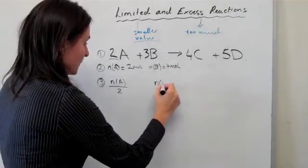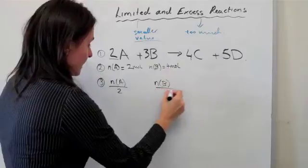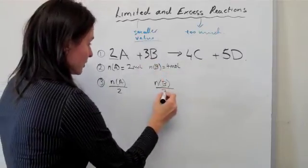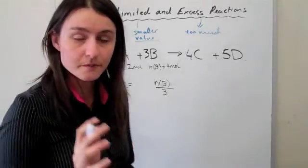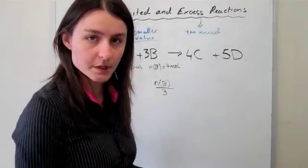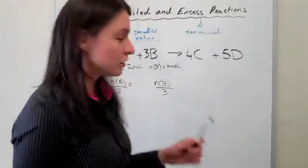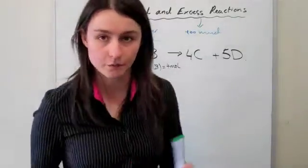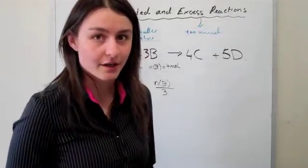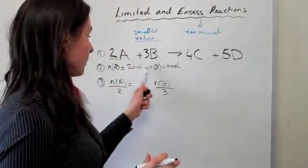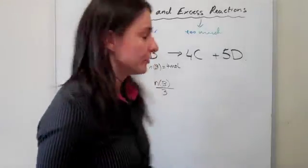You get the mole of B and then you divide it by its coefficient, so the coefficient is 3 in this case. This is just a technique to be able to work out which one is limited and which one is excess. You do not use stoichiometry with these values. Refer back to the original values. We'll look at that soon.